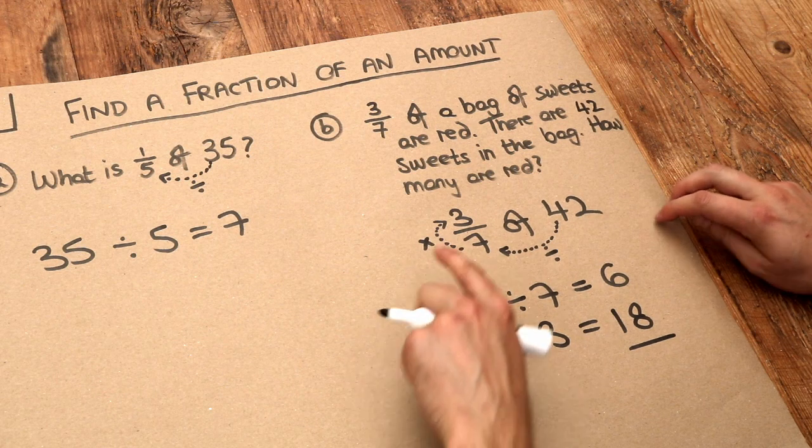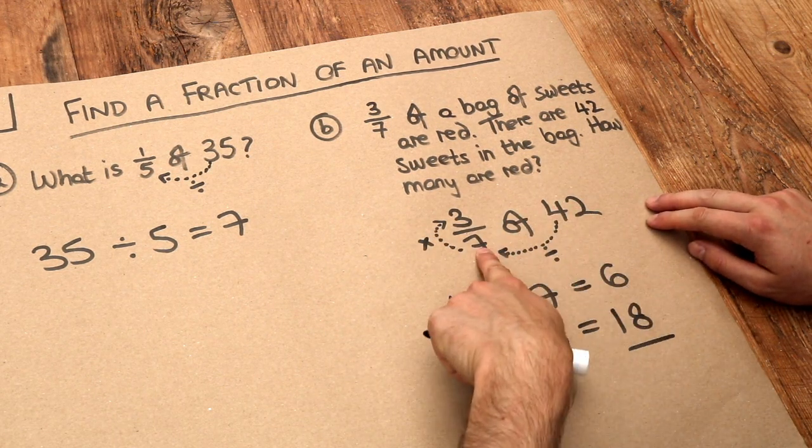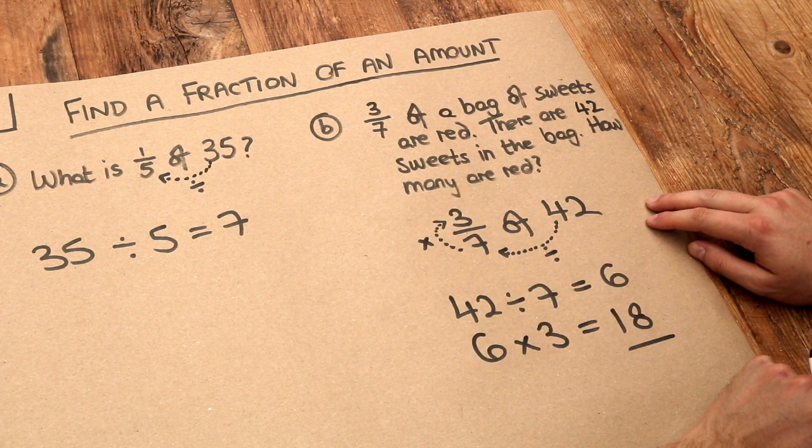Just to recap: to find a fraction of an amount, we divide that number by the bottom number and then multiply it by the top number. Thank you.